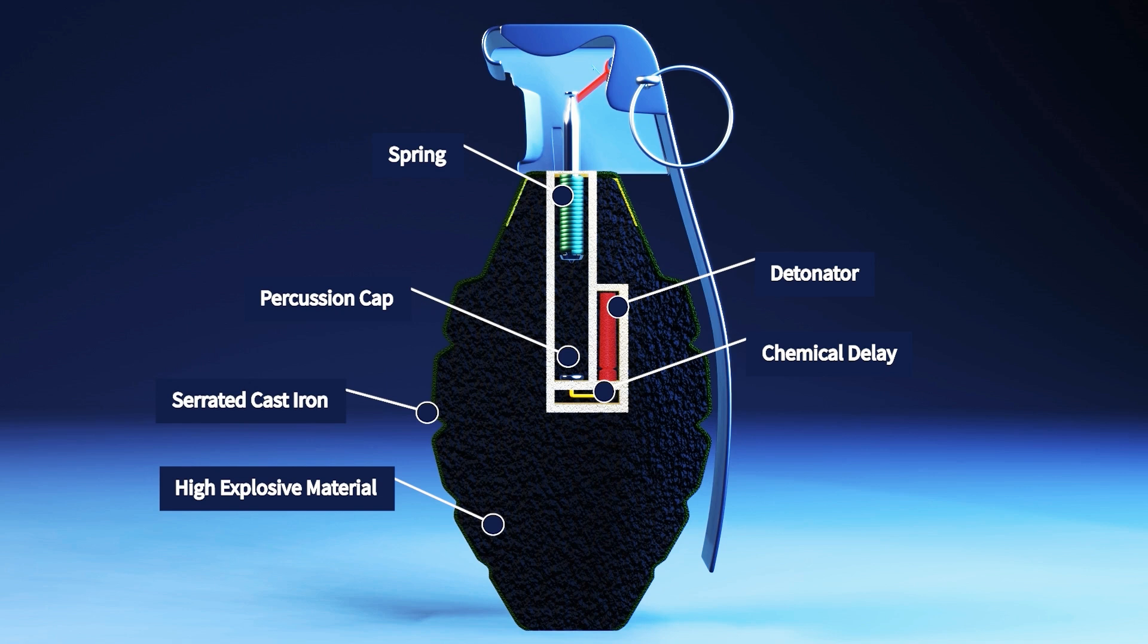On top of the grenade is a striker held in place by the striker lever. The striker lever is secured in place by the safety pin. So, how does it all come together to make the grenade explode? Let's find out.